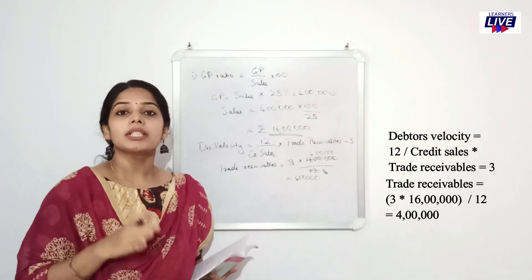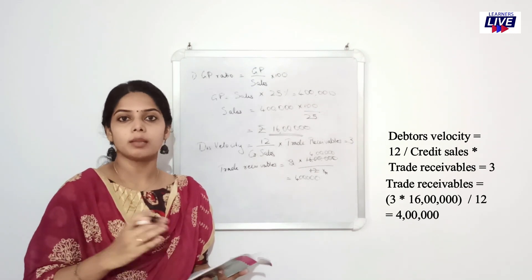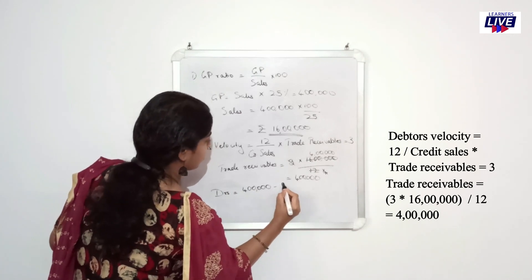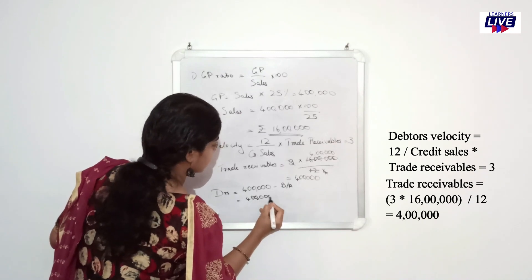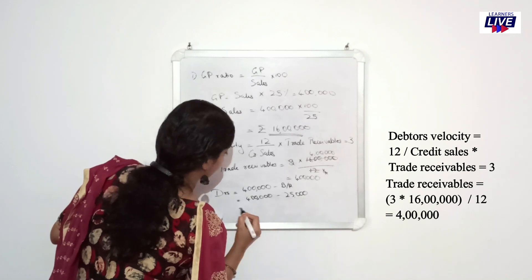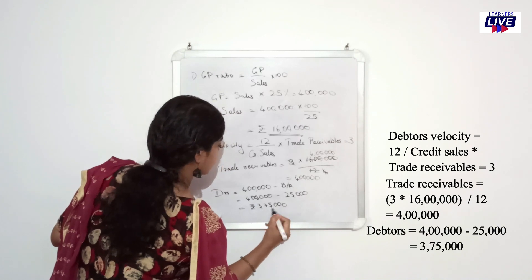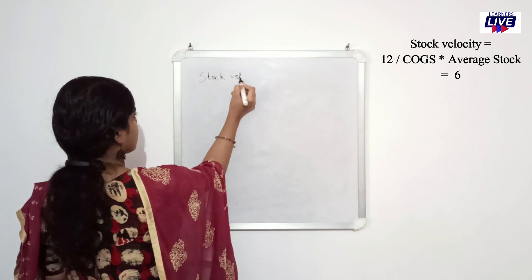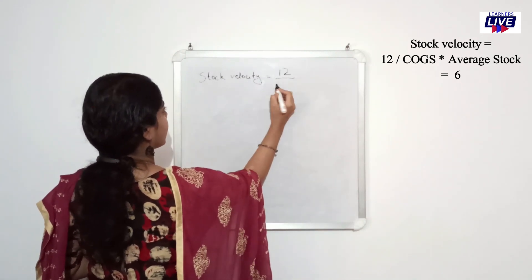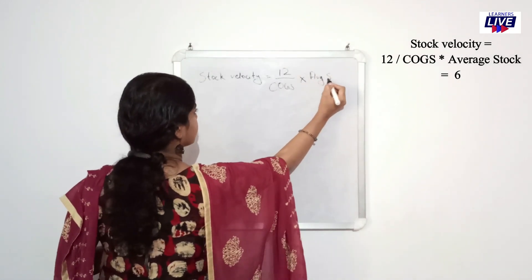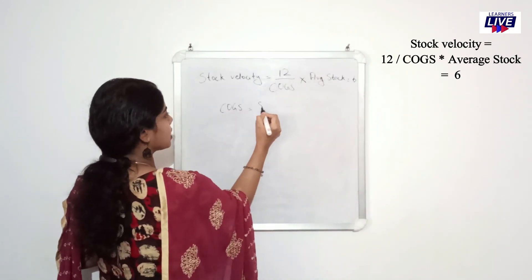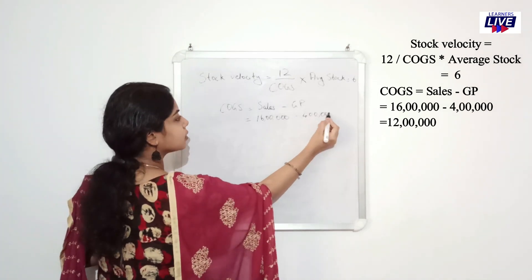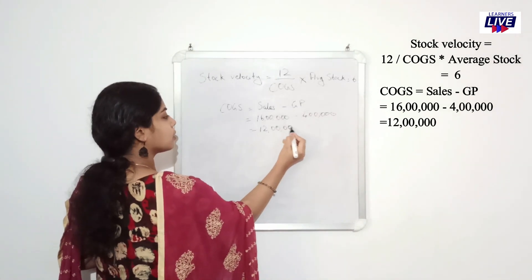In this 4 lakh, debtors are available along with bills receivables. The bills receivables are 25,000, so debtors equal 4 lakh minus 25,000, equal to 3,75,000. Now let's go to closing stock — stock velocity. Formula: 12 divided by cost of goods sold into average stock. Cost of goods sold equals sales minus gross profit, equal to 16 lakh minus 4 lakh, equal to 12 lakh.